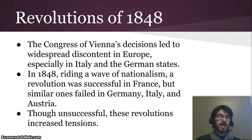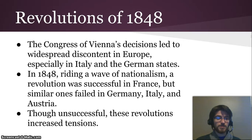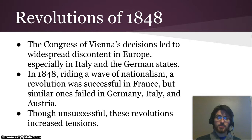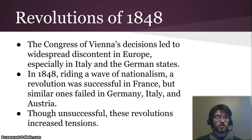But a lot of people in those areas had the new idea that they should be living in a country based on their national identity, and that was not the situation they found themselves in. In 1848, riding this wave of nationalism, a revolution was successful in France, kicking out the king that had been imposed on them by the Congress of Vienna. But similar ones failed in Germany, Italy, and Austria. As a result, there were significantly increased tensions — it built more nationalist ideas and showed that revolution could be successful, but it also basically forced all of those feelings down below the surface.